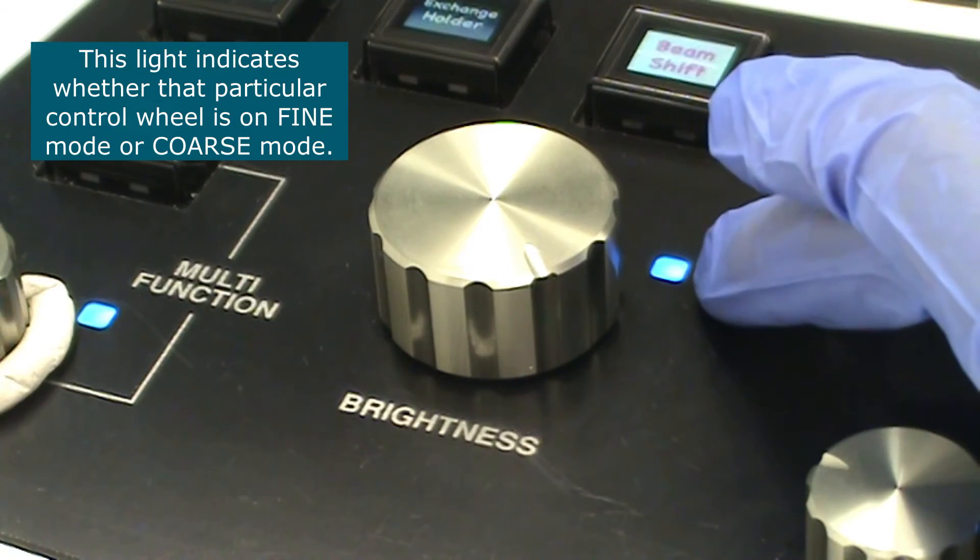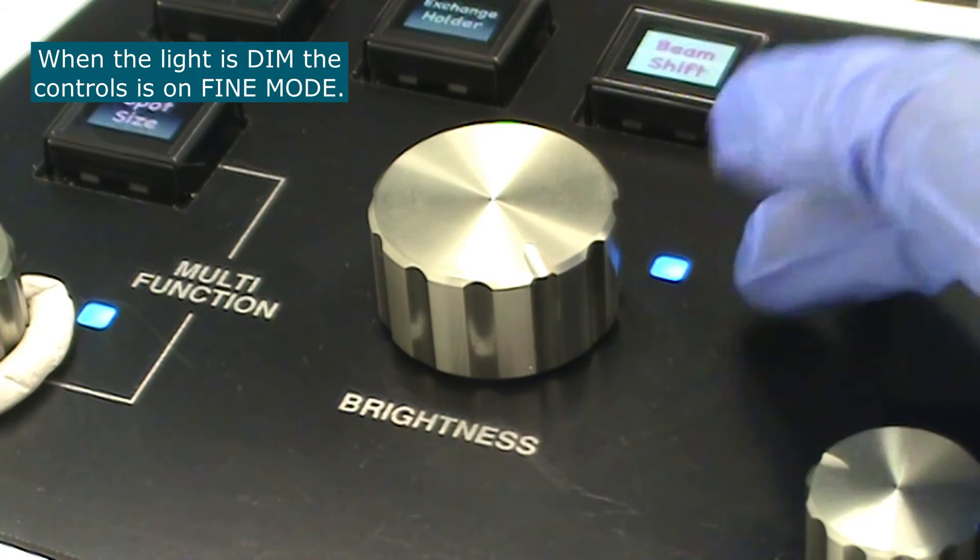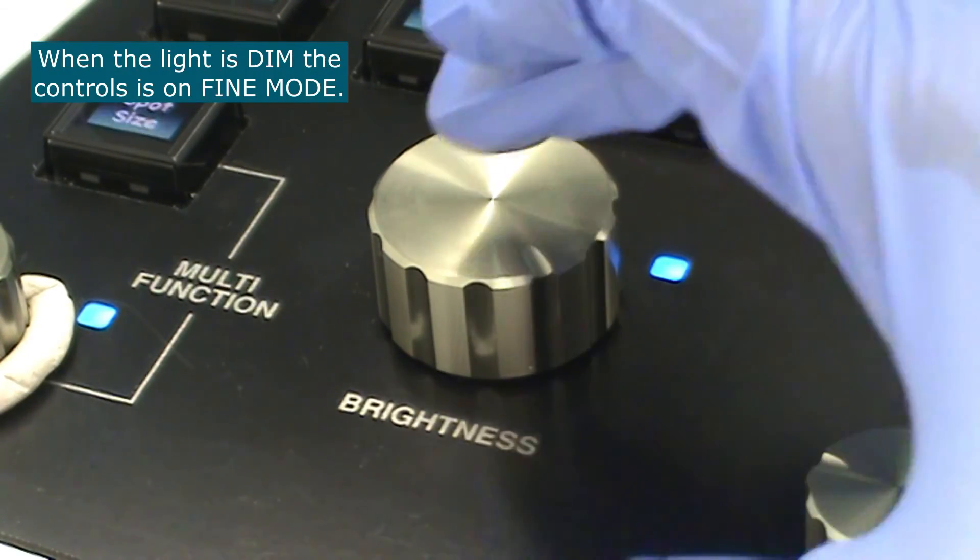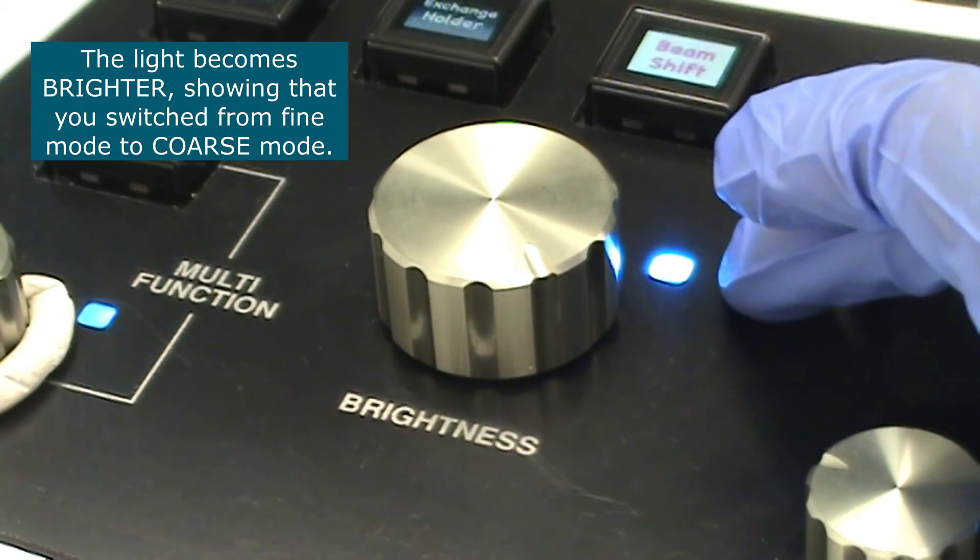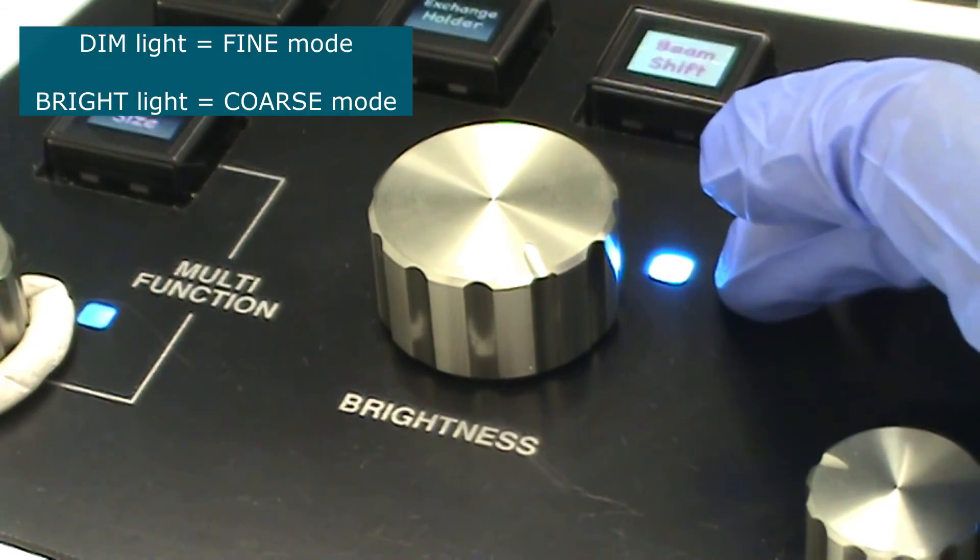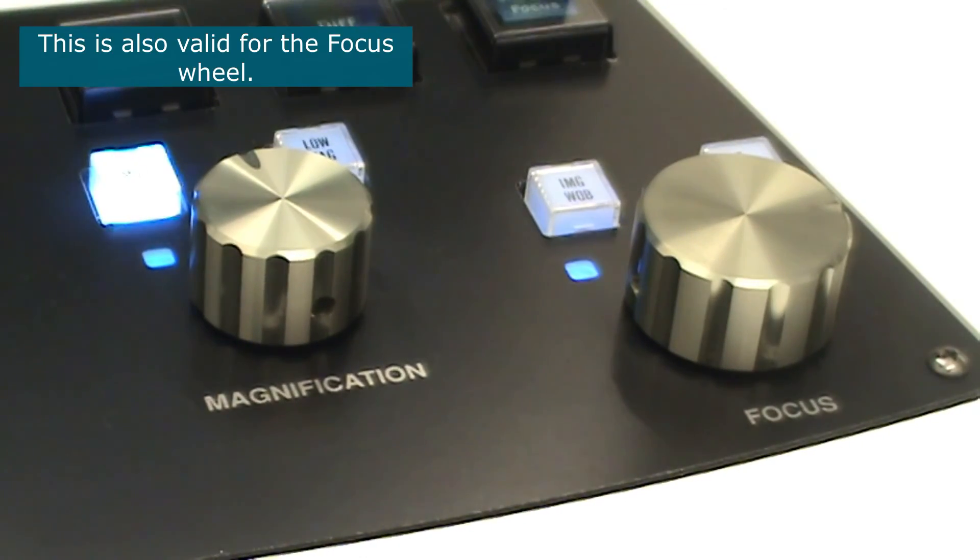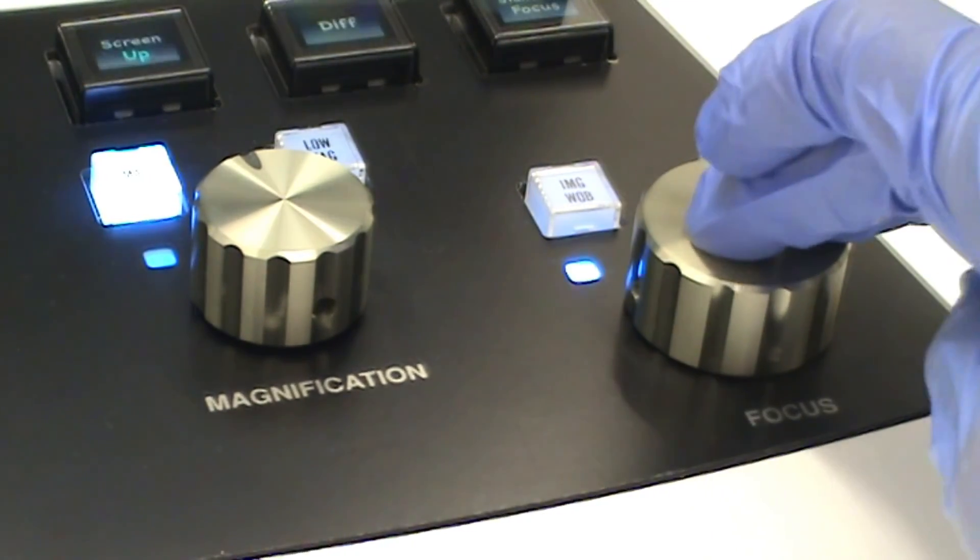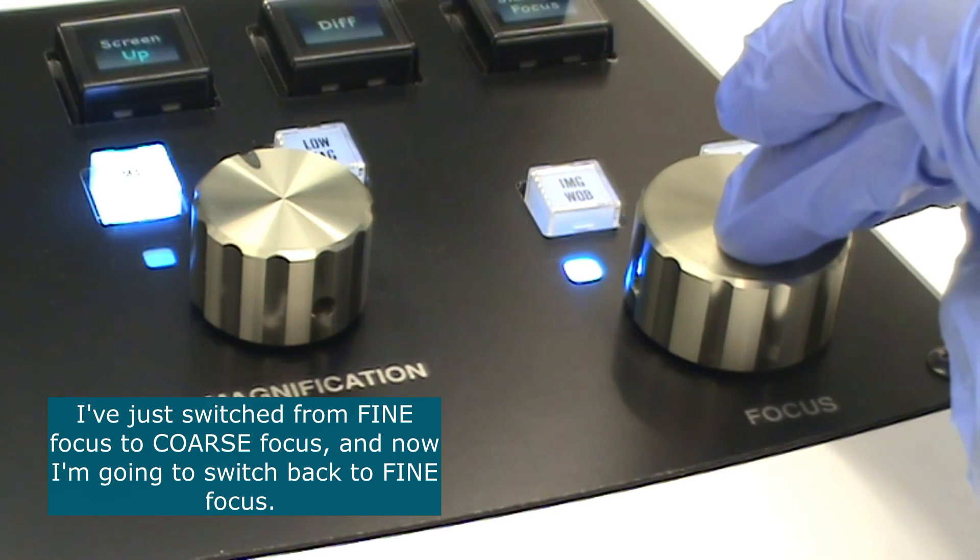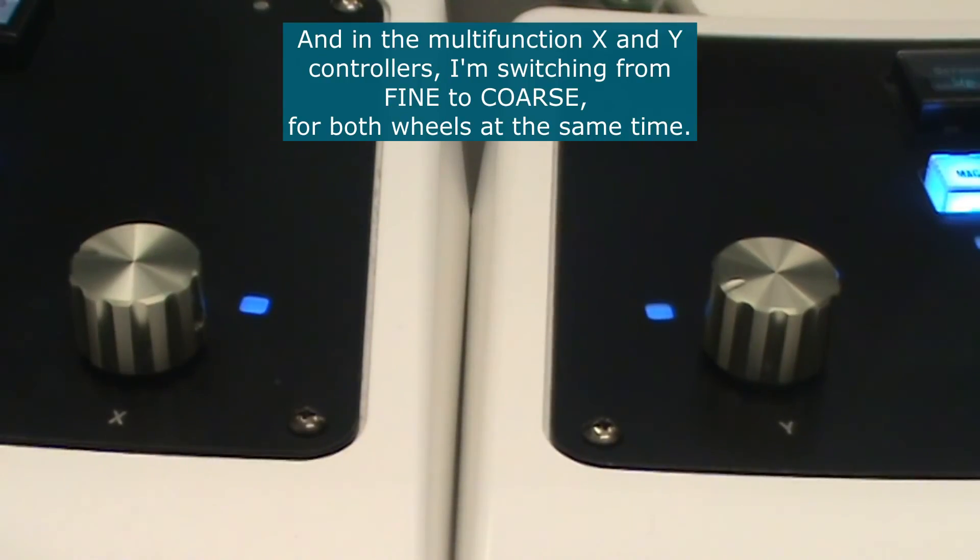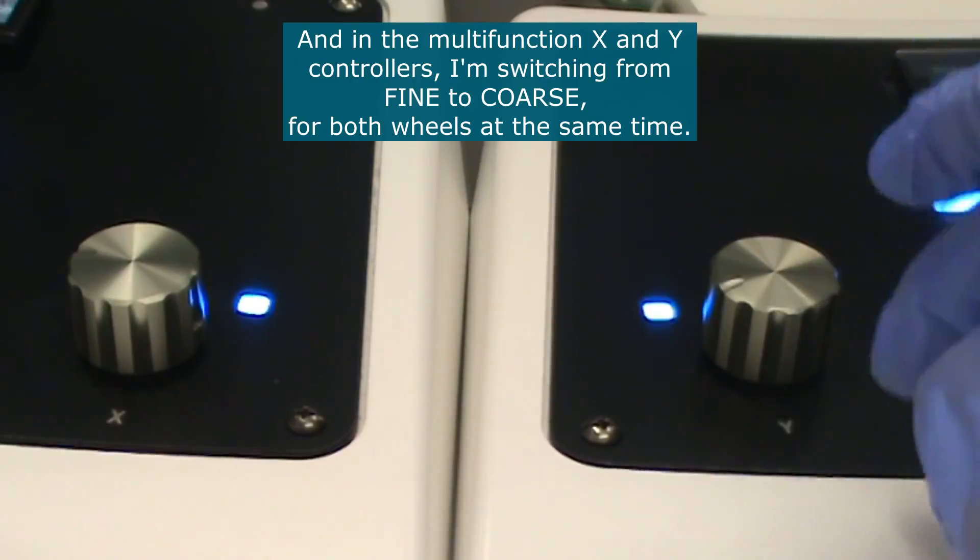This light indicates whether that particular control is on fine mode or coarse mode. When the light is dim the control is on fine mode and if you press the wheel then the light becomes brighter so you've switched from fine mode to coarse mode. So it's on coarse when the light's bright and it's on fine when the light's dim. This is also valid for the focus wheel. So I switched from fine focus to coarse focus and now I'm going to switch back to fine focus. And in the X and Y multifunction controllers I'm switching from fine to coarse for both of them.